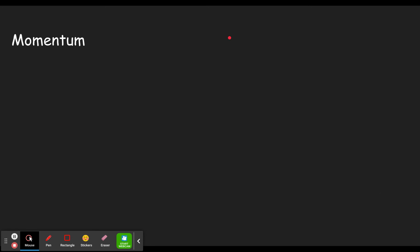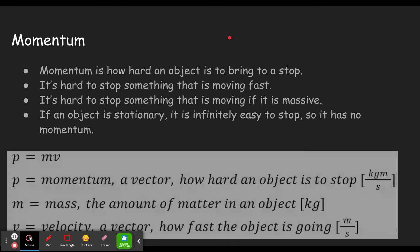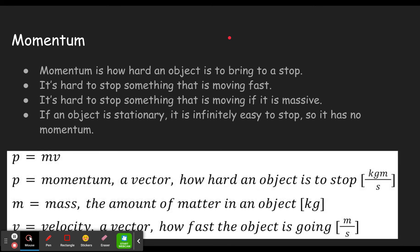So just a brief review here. I'll link the momentum concept builder video. But quickly, momentum is how hard an object is to bring to a stop. Things that are moving fast and are massive have a big momentum. The equation is p equals mv. You can see the units here. There's a lot more in the video on momentum.